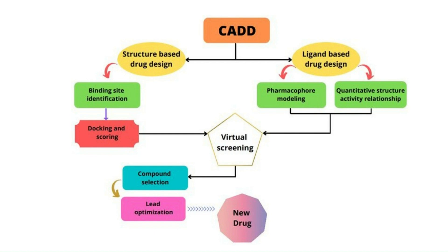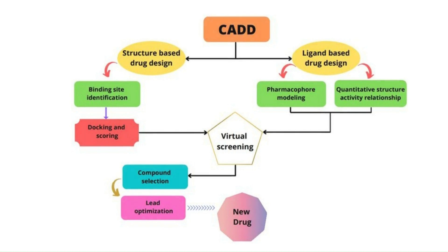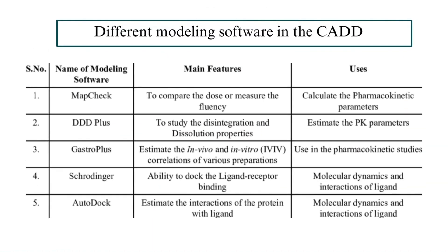After virtual screening, the lead compound is selected, optimized, and a new drug is produced. Different modeling softwares are used in computer-aided drug design, including MapCheck, DDD+, Gastroplus, Schrodinger, and Autodock. These softwares are generally used in the calculation, study and estimation of pharmacokinetic parameters, molecular dynamics, and ligand interactions.